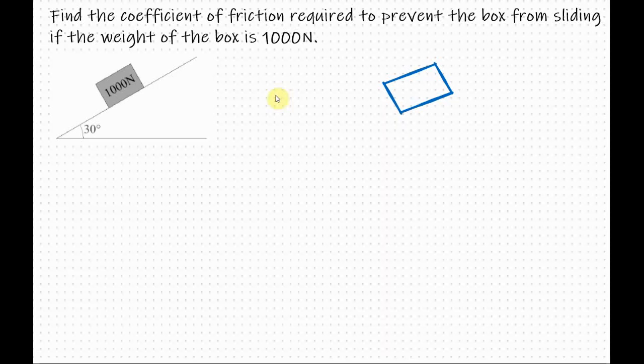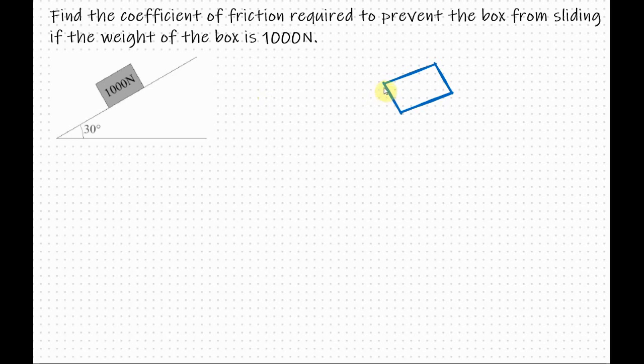Now what is acting on this box? Well we have the vertical force or the weight of the box which is given in the statement and it is 1000 newtons. Next we're pretty sure that the box won't move into the surface, which means the surface must be pushing back on the box. That means we have a normal force here and we can see that the normal force goes through the same point on our free body diagram.